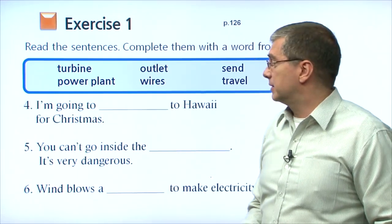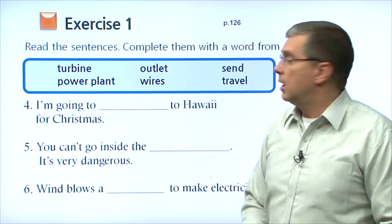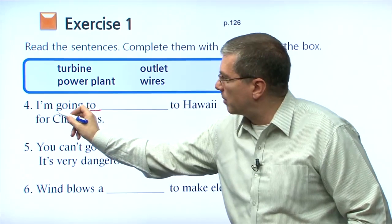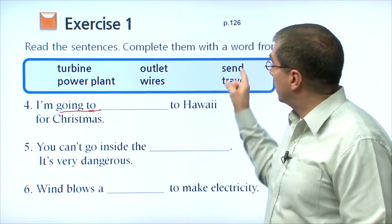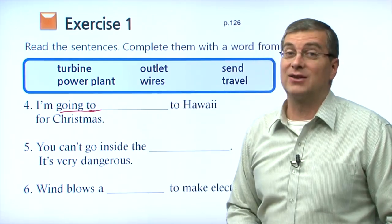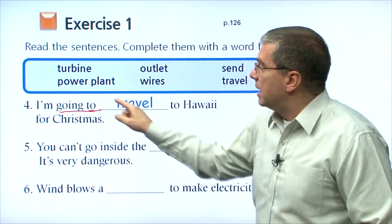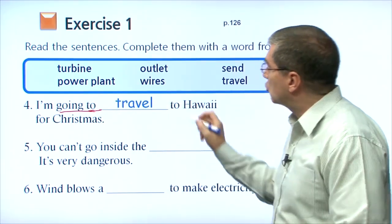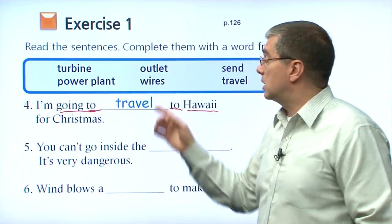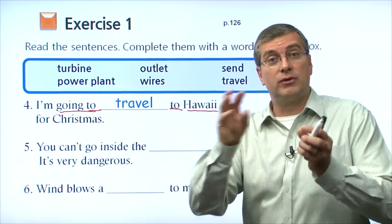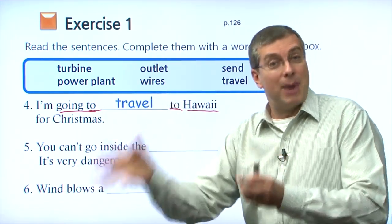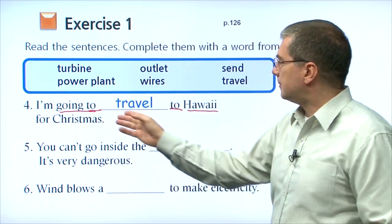Let's move on to questions four, five, and six. Number four: I'm going to blank to Hawaii for Christmas. We can see 'going to,' so we need a verb. We already used send, so we're probably going to use travel. I'm going to travel to Hawaii for Christmas — that fits. Remember, when we use travel, we travel to somewhere. Travel to a place: travel to Hawaii, travel to another country.